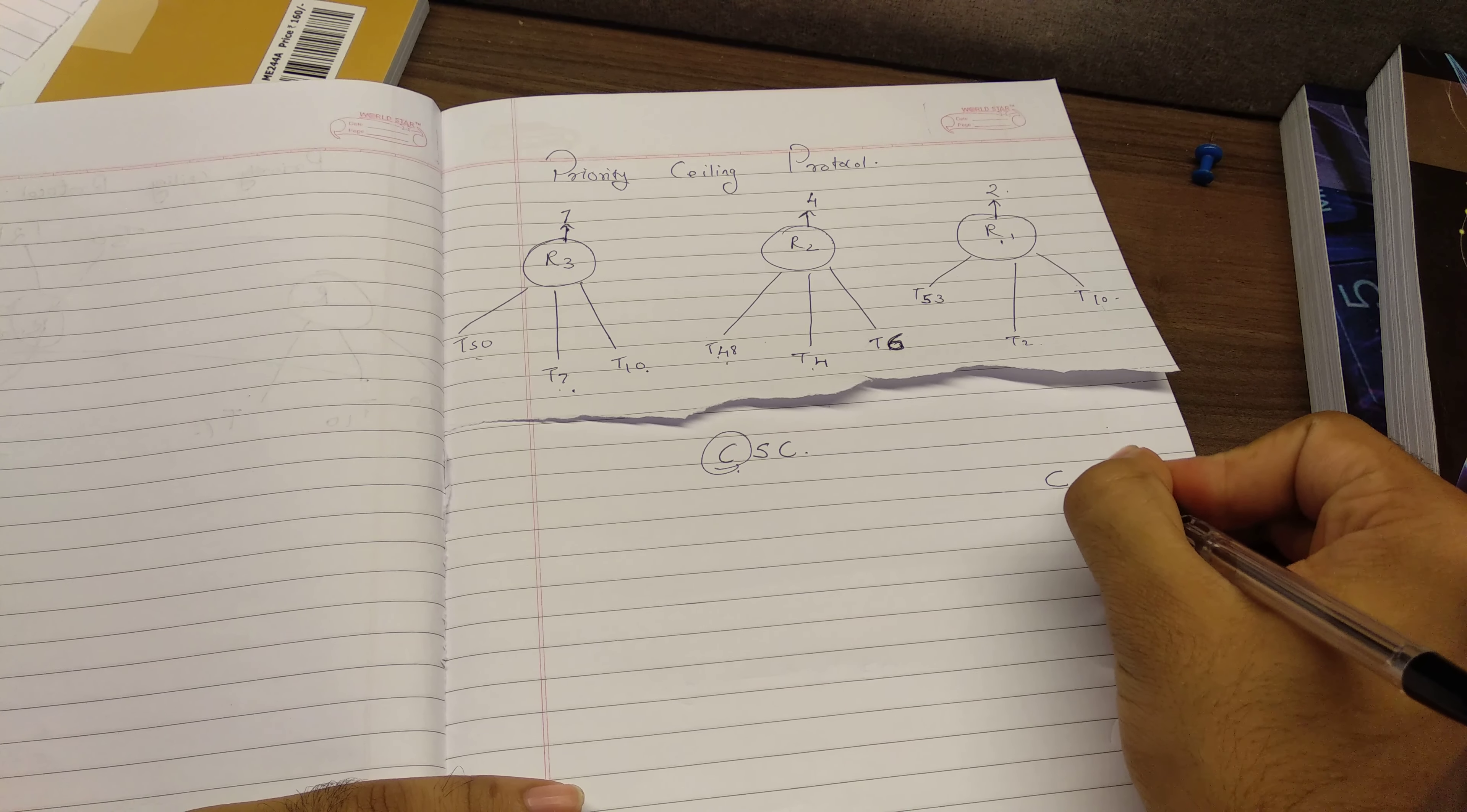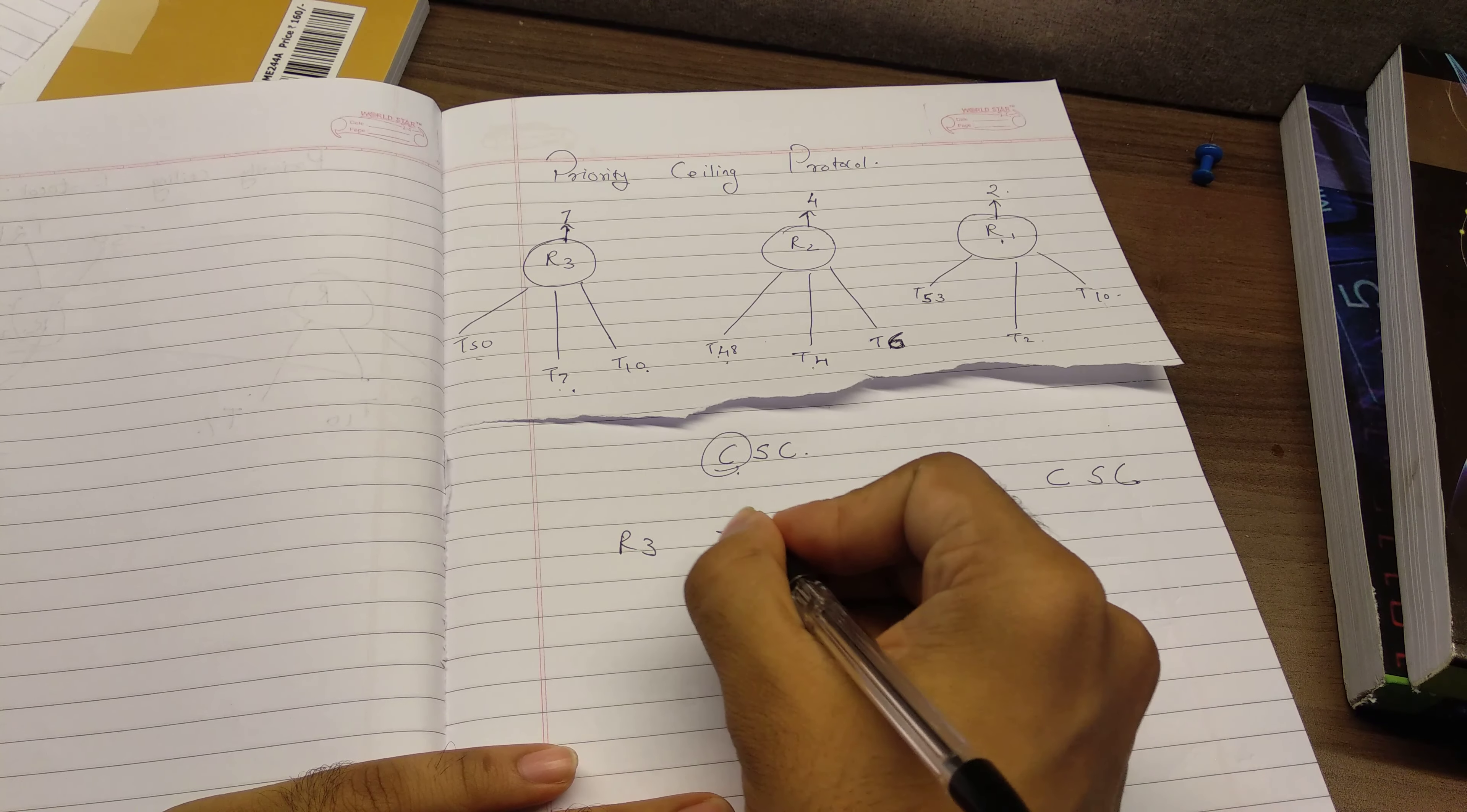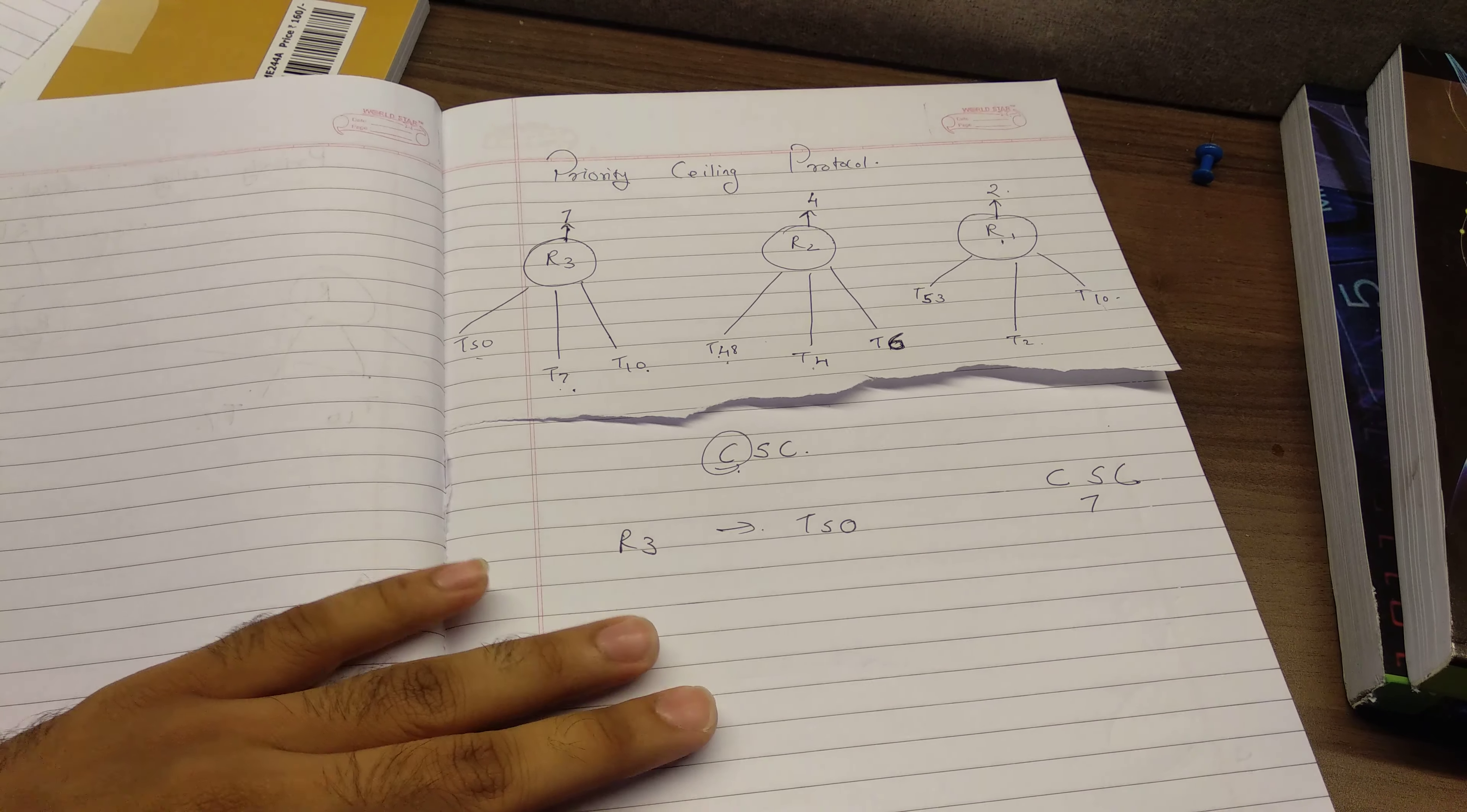So how CSC is, for example, if my R3 is being taken by some random task, for example T50 has taken R3, my system ceiling would be 7. So that is how system ceiling works.